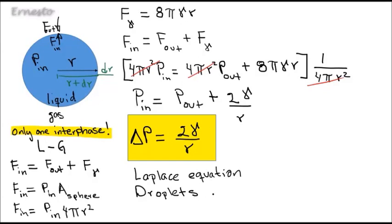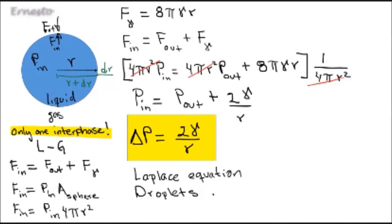This is the Laplace equation for droplets. This equation shows that the pressure increment inside the liquid with a curved surface is also size related. In other words, the smaller the radius, the larger the pressure increment is going to be.